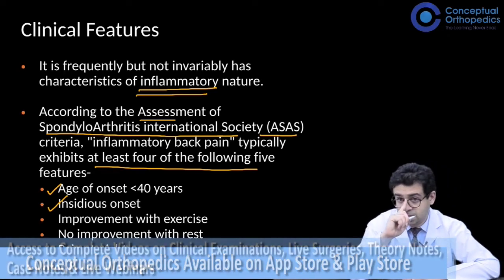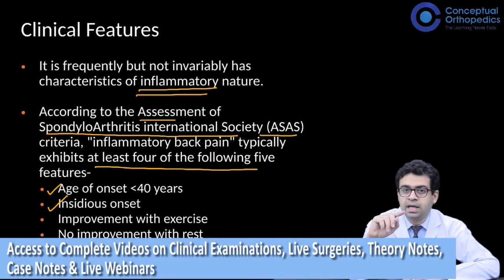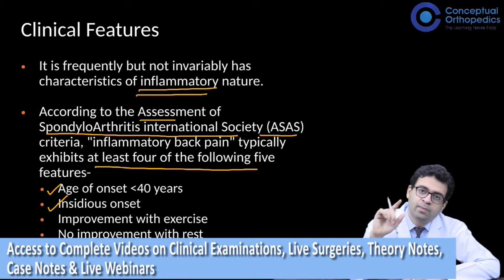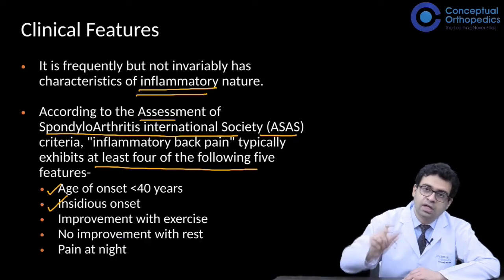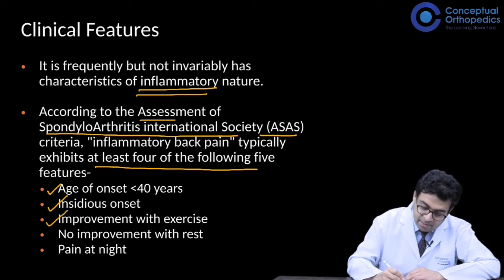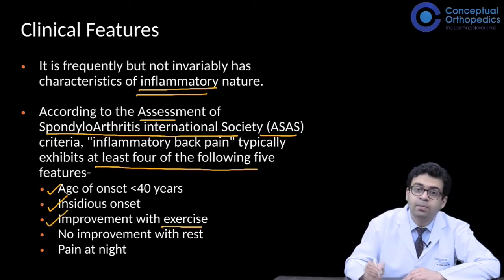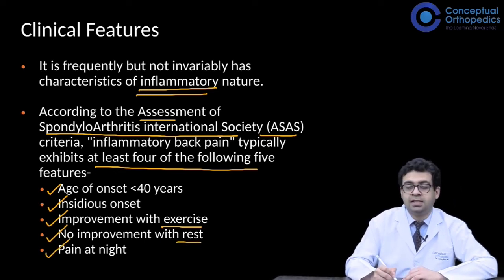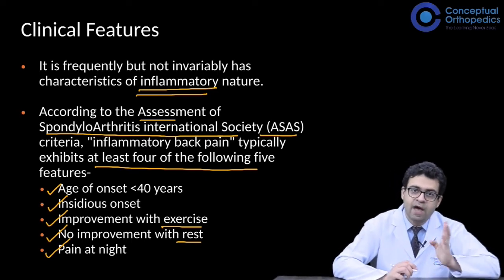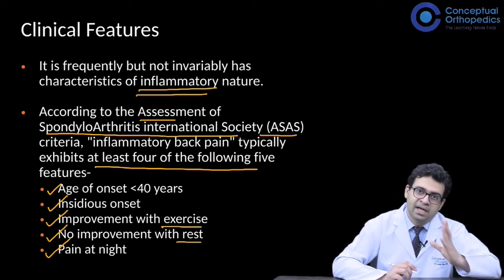The first ASAS criterion is age of onset — it should be under 45 years. The second is insidious onset. If you ask a patient with ankylosing spondylitis when their back pain started, they may not be able to pinpoint a particular day or week, because it is gradually increasing with a very gradual onset — not acute like in acute disc prolapse. The third criterion is that pain improves with exercise.